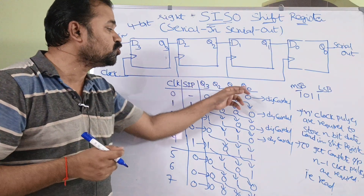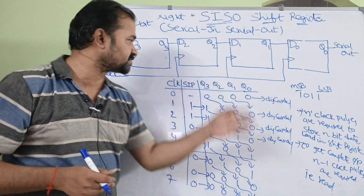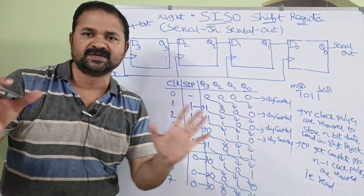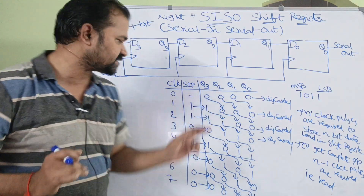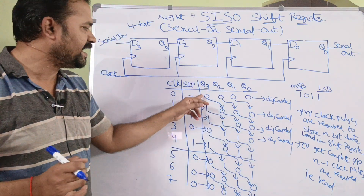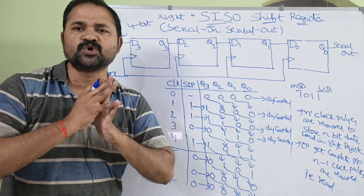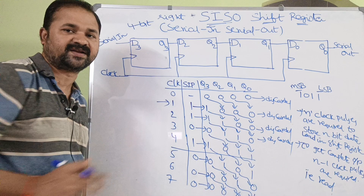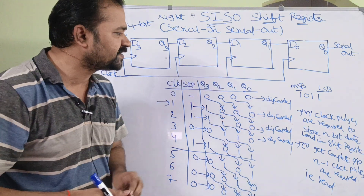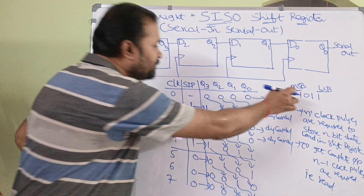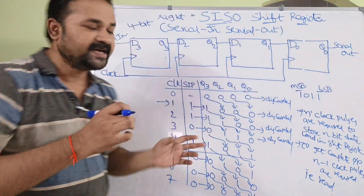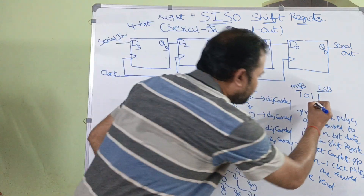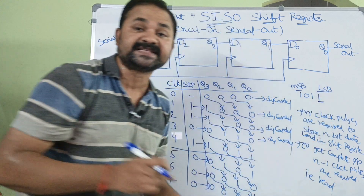Q3, Q2, Q1, Q0 are the outputs of the flip-flops. Initially the clock pulse is 0, so no clock pulse is applied, there is no serial input, and the outputs are all 0s. At clock pulse 1, we apply a clock pulse. Our target is to store MSB here and LSB here, with the data being shifted bit by bit. So first we need to apply 1 as the serial input — the serial input is 1, then 1, 0, 1.